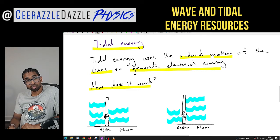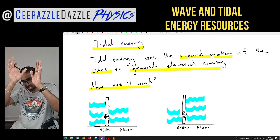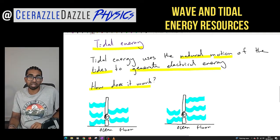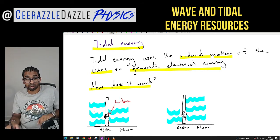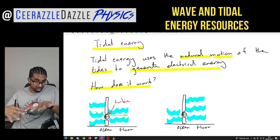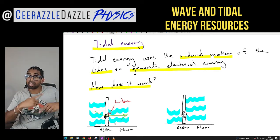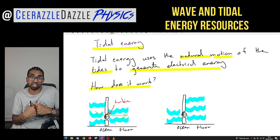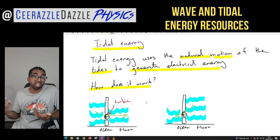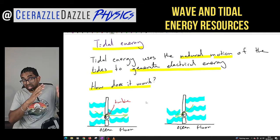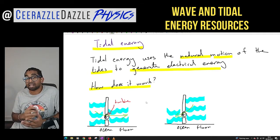Here's a diagram for tidal energy. The device is placed at the bottom of the sea floor — a large concrete base with a turbine at the bottom. As the tide comes in, the water passes through the turbine causing it to spin. The turbine is connected to a generator which generates electricity. When the tide goes out, the water flows in the opposite direction, also generating electricity. So you get electricity both when the tide comes in and when it goes out.